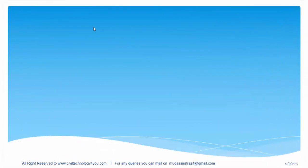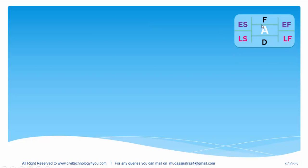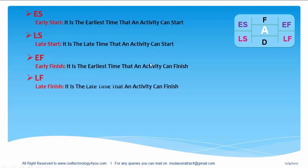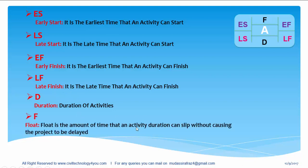In real time, in project planning, planners define early start, late start, early finish, late finish, float and duration for every single activity. Early start is the earliest time that an activity can start. Late start is the latest time that an activity can start. Early finish is the earliest time that an activity can finish. Duration I have explained already, and float is the amount of time that an activity duration can slip without causing the project to be delayed.